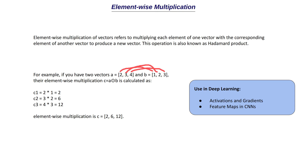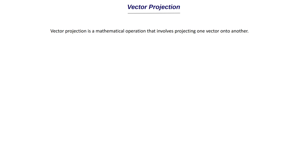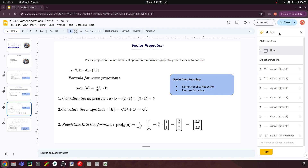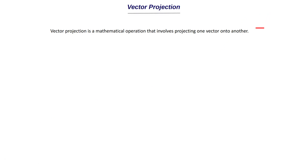The next topic is vector projection. Vector projection is a mathematical operation that involves projecting one vector onto another. For example, if we have two vectors — let's call them the first and second vector — and we project the second vector onto the first vector, we can draw a dotted line to where it meets the first vector. The resultant vector is the projection vector, which we can call PR.